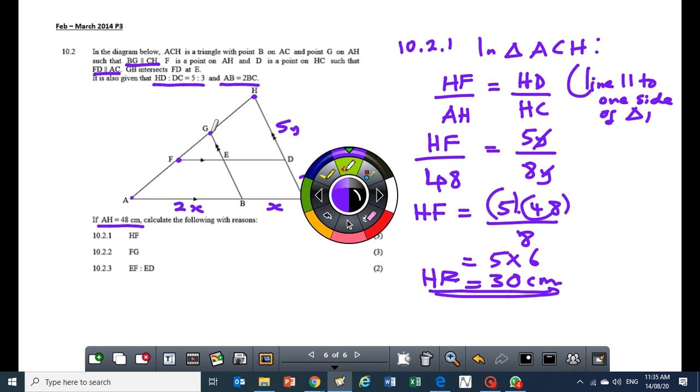We know that AH is 48. We also know that HF is 30. So if I want to find FG, it would be better to try and introduce another constant. So I can say let FG be equal to K. If FG is equal to K, it means that HG will be 30 minus K. What that means is that AF is going to be equal to... Remember if HF is equal to 30, it means AF is going to be equal to 18.